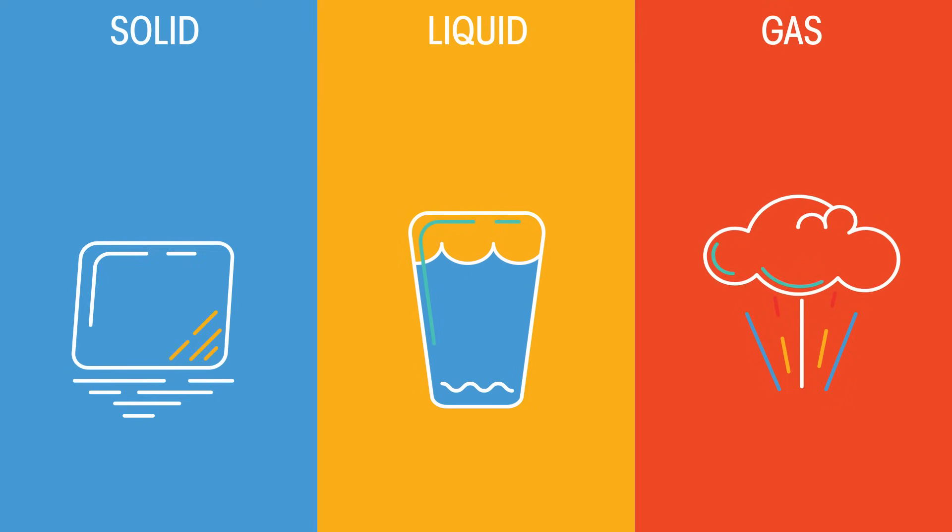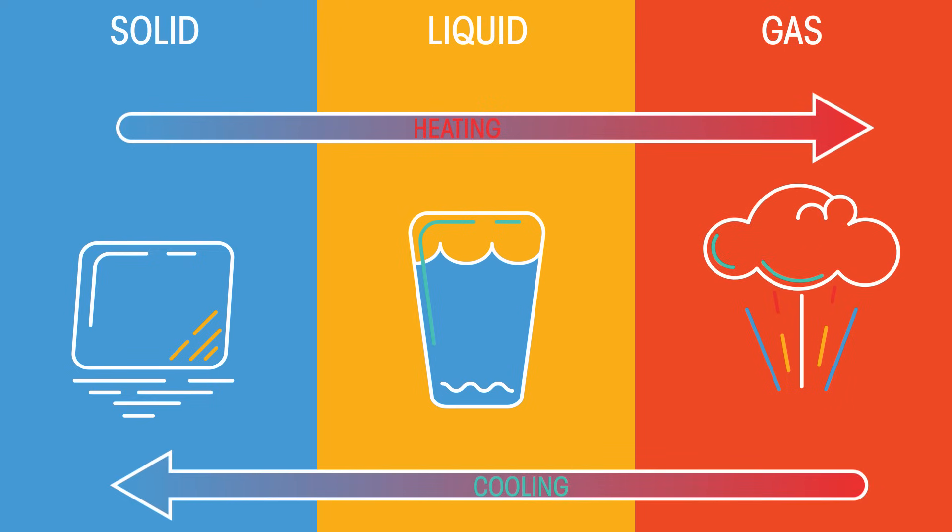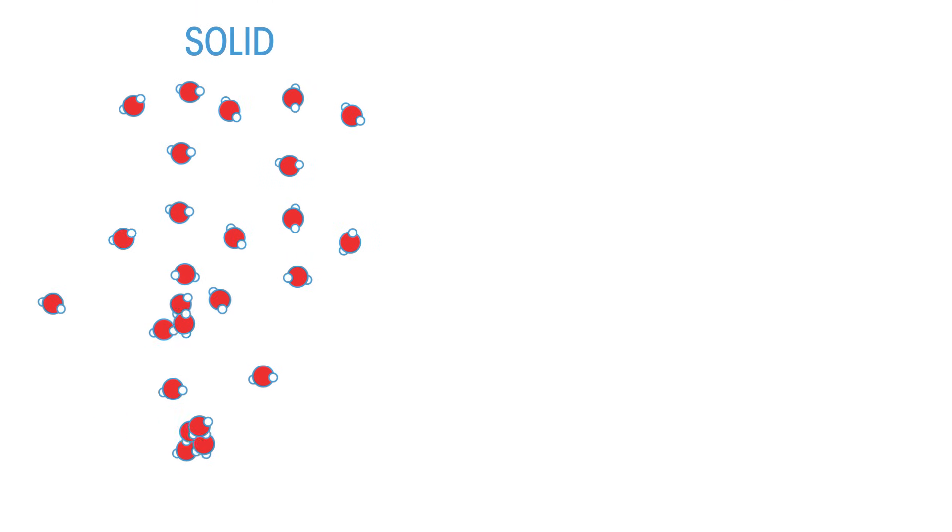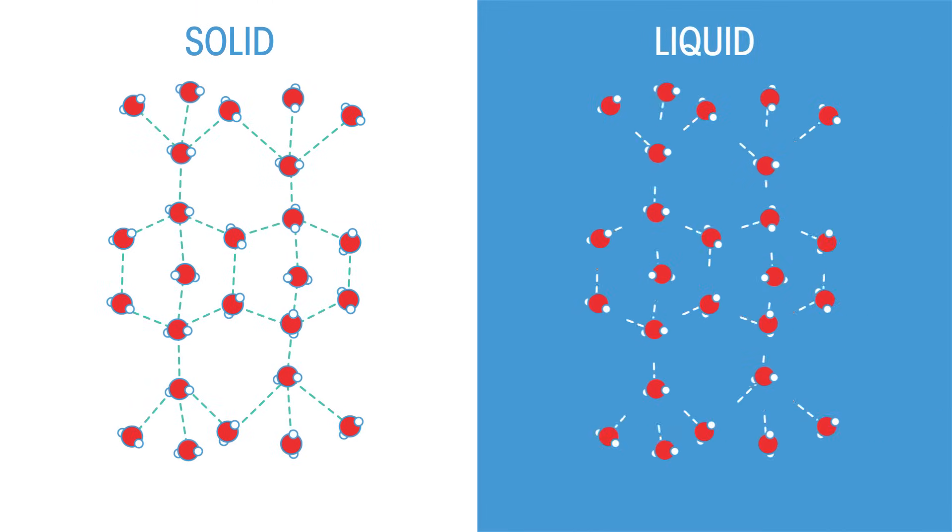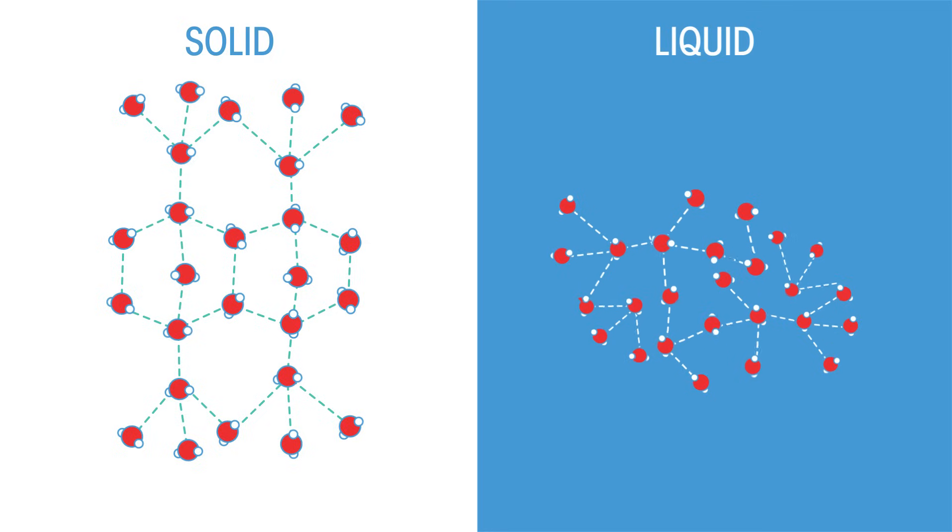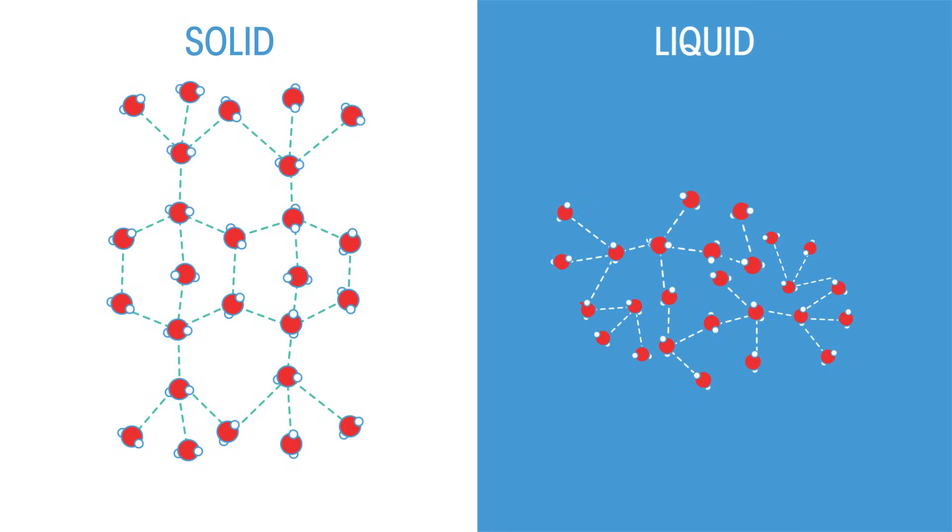Matter can transition between the three states when heated or cooled. But why is heat key in all of this? When a material is heated, it absorbs heat energy. This additional energy can cause attractive forces between molecules to break.